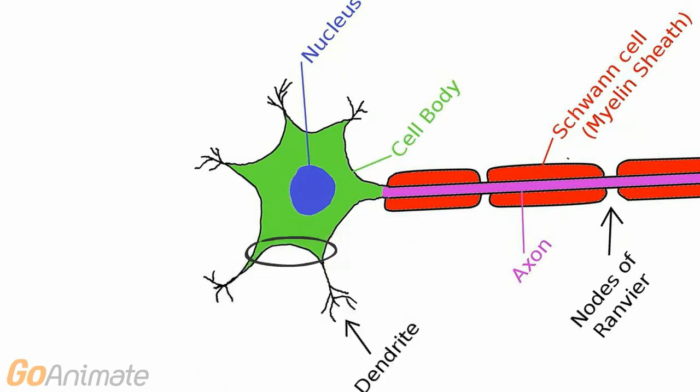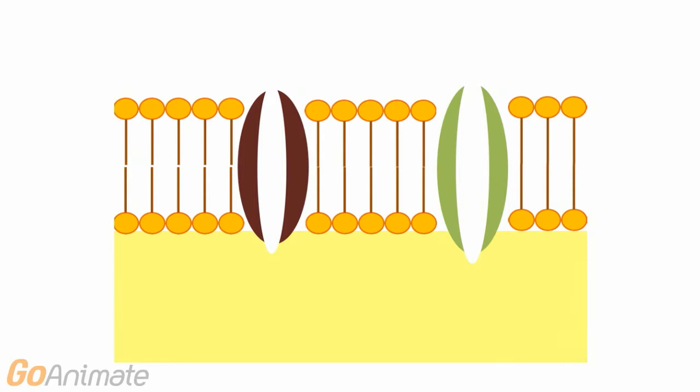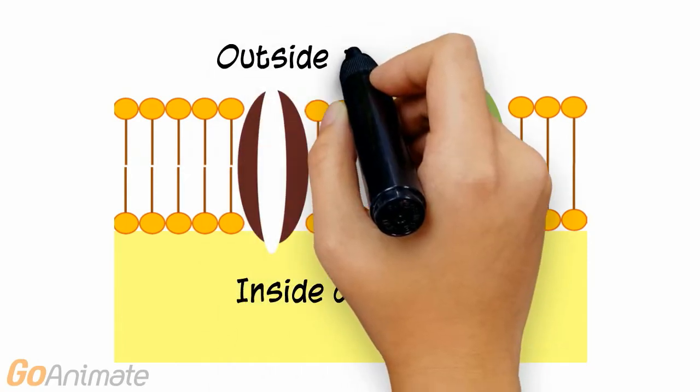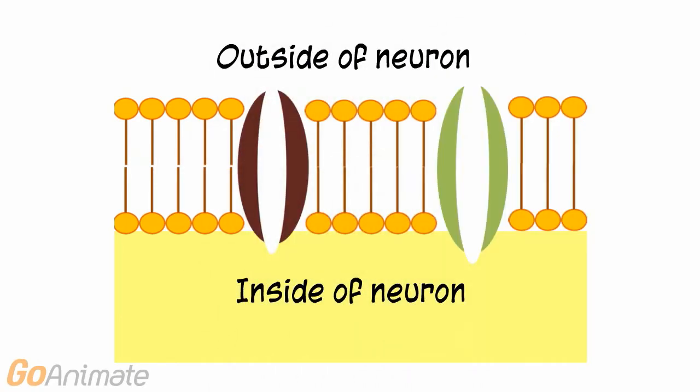Let's take a look at the neuron cell membrane to learn more. The colored portion of this diagram represents the inside of the neuron, while the white portion represents the fluid surrounding the neuron.